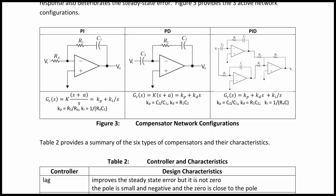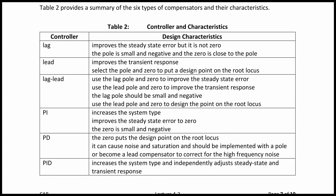To summarize all the controllers discussed: a lag controller improves the steady-state error but it is not zero — the pole is small and negative and the zero is close to the pole. A lead controller improves the transient response by selecting the pole and zero to place a design point on the root locus. A lag-lead controller has a lag pole and zero to improve the steady-state error and a lead pole and zero to improve the transient response, where the lag pole should be small and negative and the lead pole and zero define the design point.